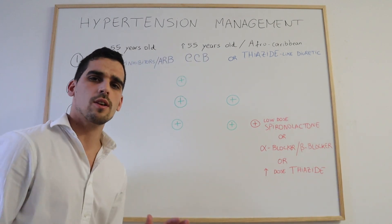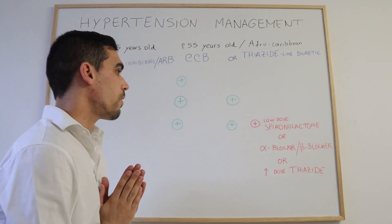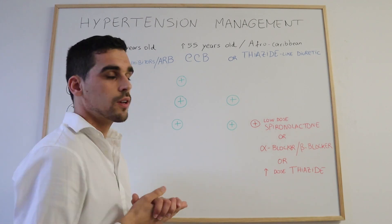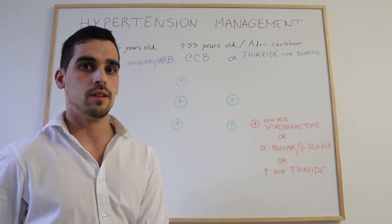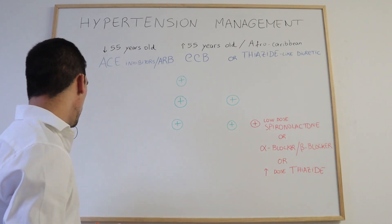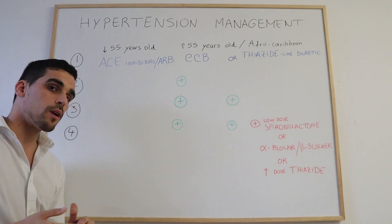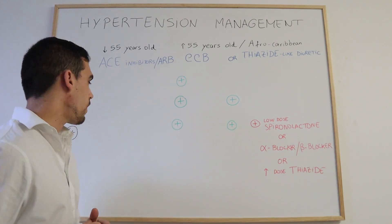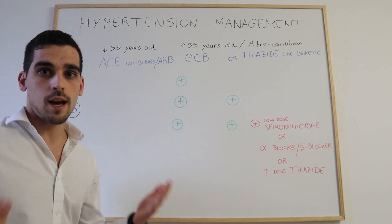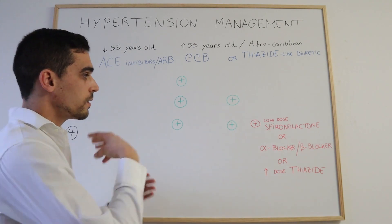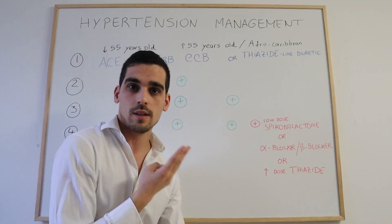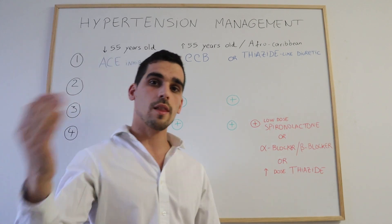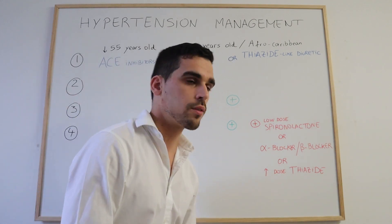This three-drug combination is normally enough to control hypertension in most patients. However, there is a smaller group of patients with resistant hypertension, meaning these three drugs are not sufficient to control it, so a fourth drug needs to be added.